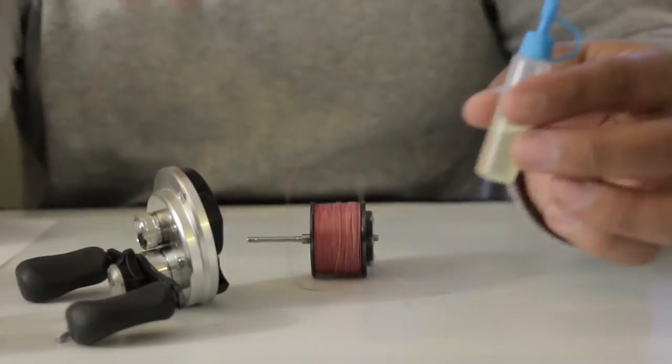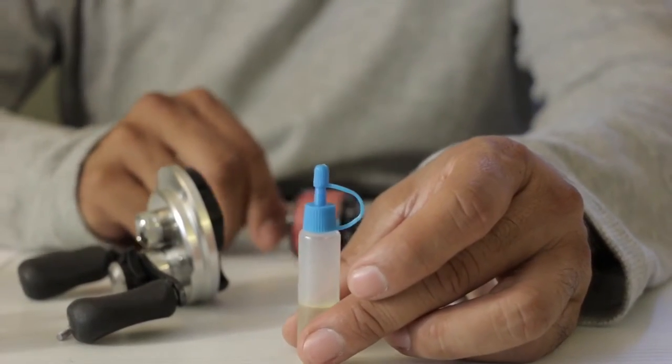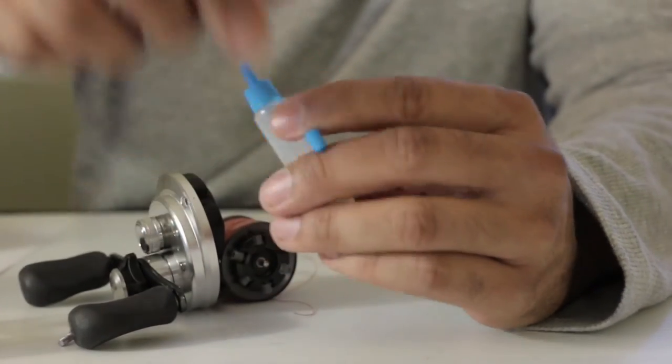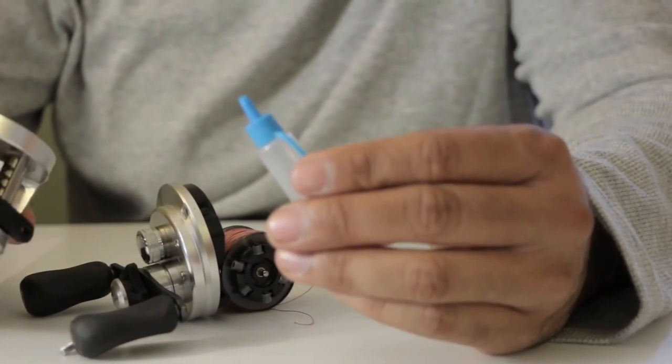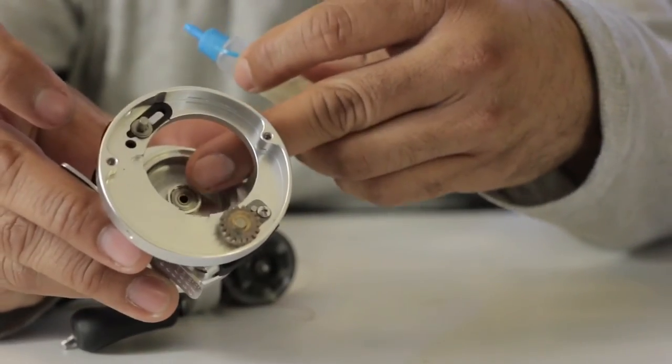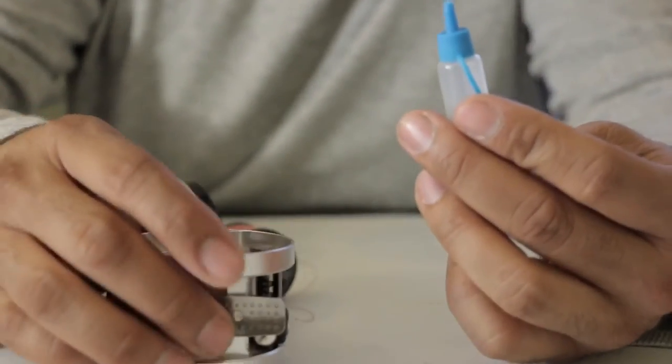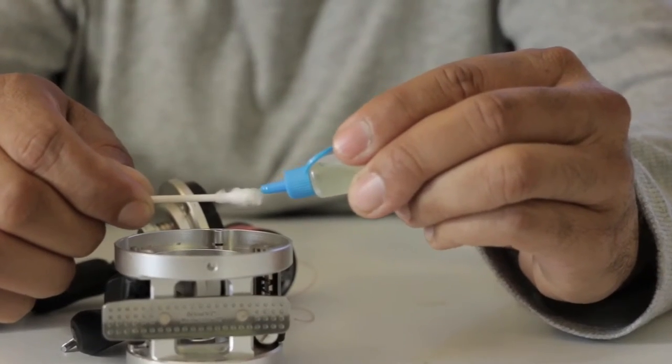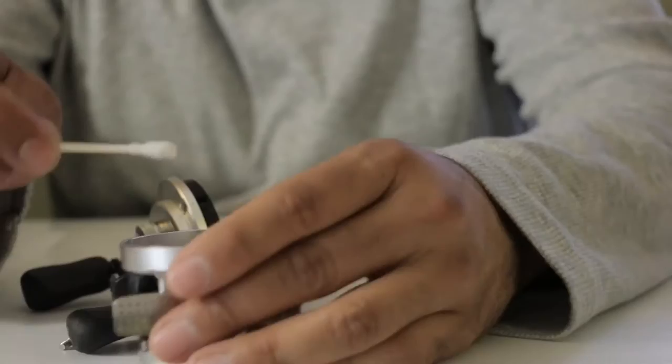I'll take the oil that Shimano provides, and I will put a drop on the bearing system. There's a bearing in here. A lot of times it's easier to just put a drop onto a cotton swab and rub that onto the bearing.